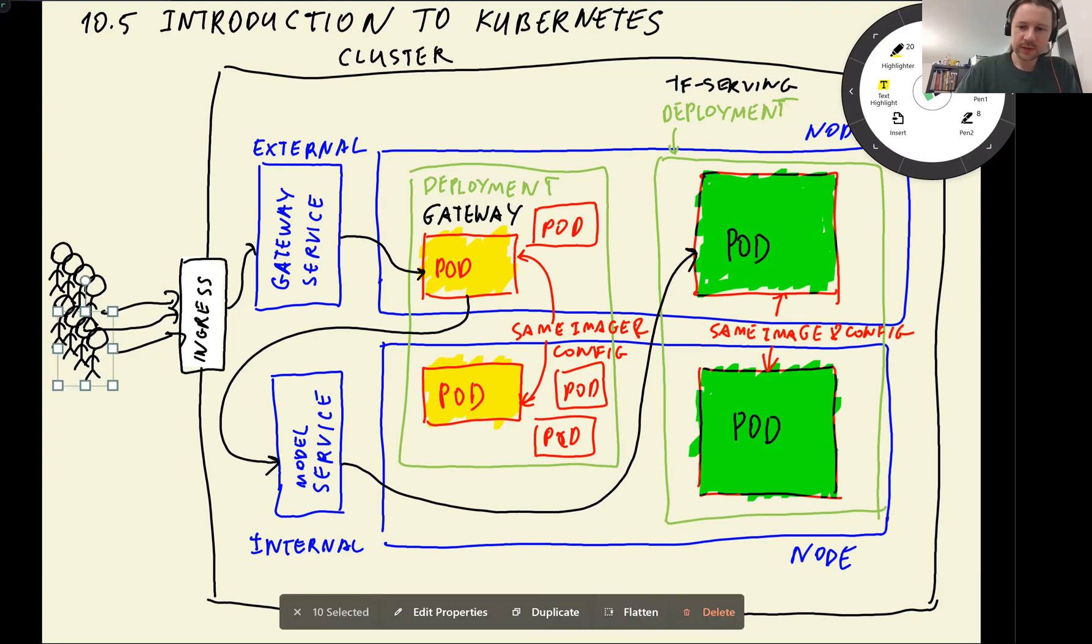Most of the things we discussed, we will not need to deal with. So for example, we will not be dealing with horizontal pod autoscalers. We will not deal with ingress. But I'm pretty sure if you work with Kubernetes, these terms will come up. And just to help you understand what they are. I downscaled back the cluster. So now we have the old image. But what we will need to use in this session are pods and deployments and then services. So this is something that we will need to be able to set up in order to deploy things to Kubernetes.